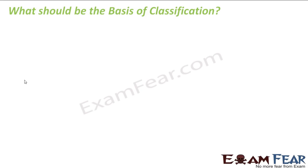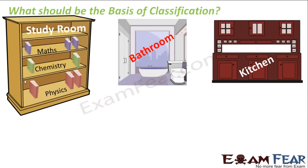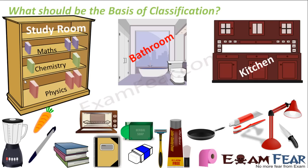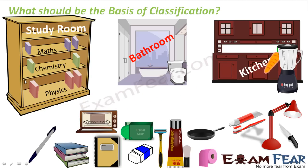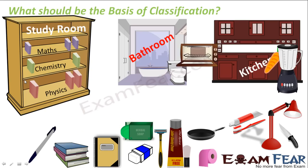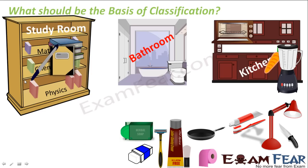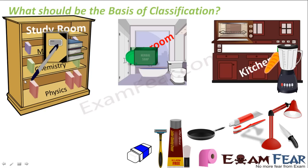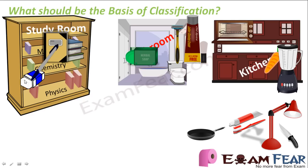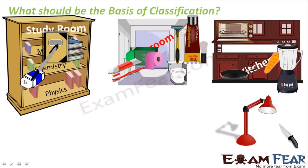Now the question is: what should be the basis of classification — on what basis should we classify organisms into different groups? Going back to the house example: why did you keep the mixer grinder or the carrot in the kitchen? Because both are helpful in cooking — they share similar characteristics. Pens, books, and notebooks all help in study, so they are kept in the study room. Based upon shared basic characteristics, things are put into the same group. The basis of classification is always the characteristics of the organisms.